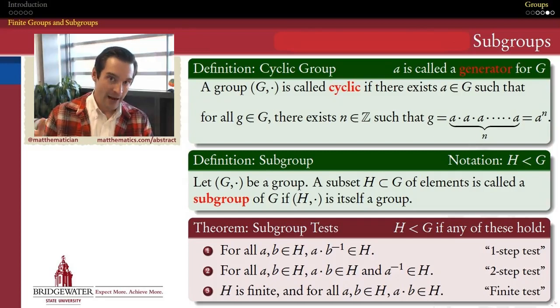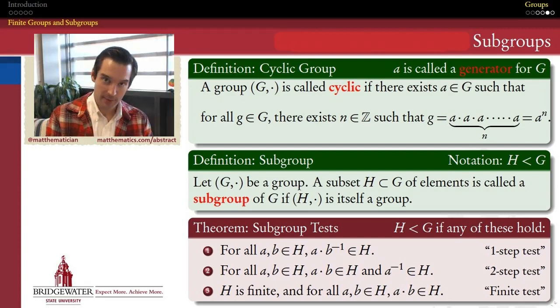In a group, any subset of its elements that itself enjoys the properties of a group, namely associativity, closure, identity, and inverse properties, that subset is then called a subgroup.